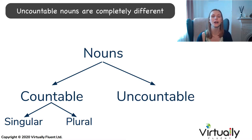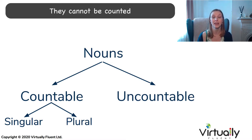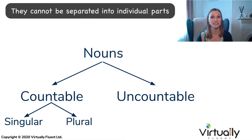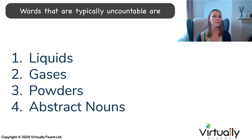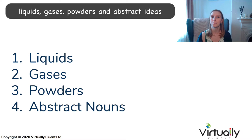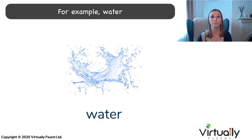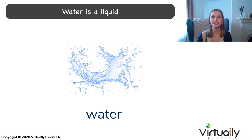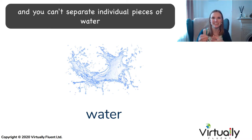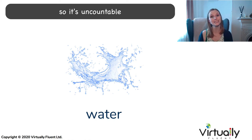Uncountable nouns are completely different. They cannot be counted; they cannot be separated into individual parts. Words that are typically uncountable are liquids, gases, powders and abstract ideas. For example, water. Water is a liquid and you can't separate individual pieces of water, so it's uncountable.